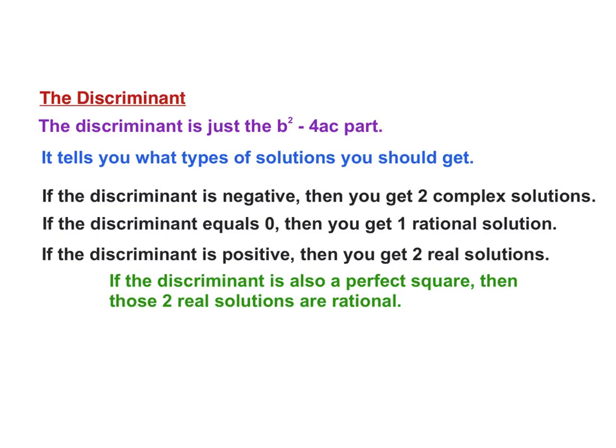So, it allows us, the discriminant is called the discriminant for reason. We are allowed to determine, discriminate what types of solutions I'm going to get. And we can put them into one of these really four categories. There's these three but then I have a subcategory of the second one. Or the third one, excuse me. Questions about that?